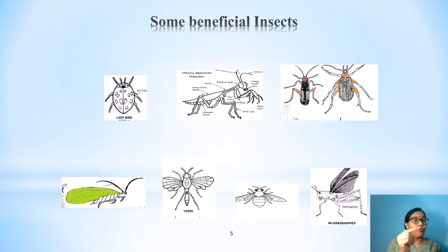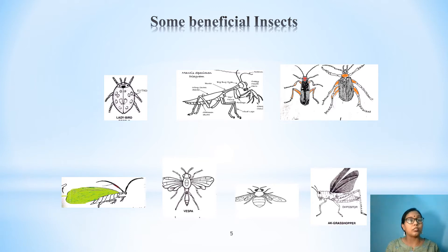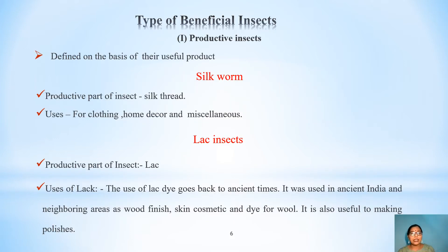In which the first one is ladybird beetle, second one is Braconid wasp, third one is ground beetles, fourth one is lacewings, wasp, honeybee, and last one is grasshopper. Now we are in a position to explain the various types of beneficial insects, and the first one is the productive insects.